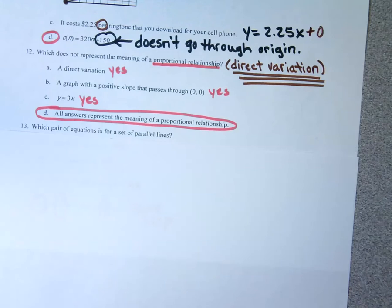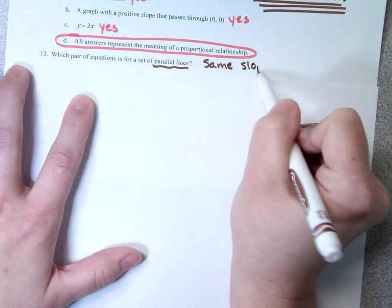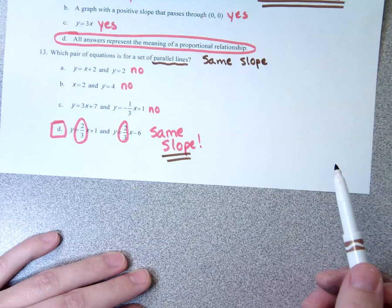Number 13 wants to know which pair of equations is for a set of parallel lines. Parallel lines have the same slope, so I want to be looking for equations with the same slope. D is the one that has equations with the same slope, so those are the ones that are parallel. None of the other equations have the same slope.